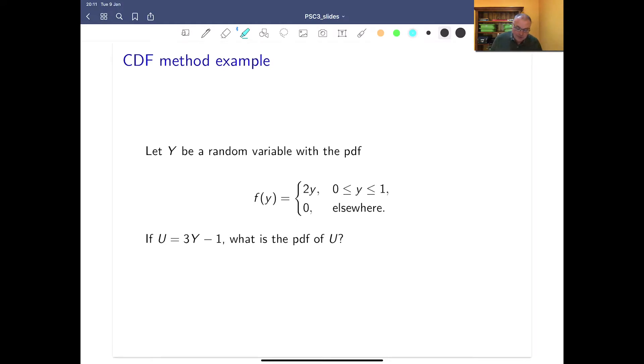Just to remind you, the area that it's not 0, that 2Y, that region between 0 and 1, we're going to call the support. We've got a new random variable, U, that is 3Y minus 1. What is the PDF?